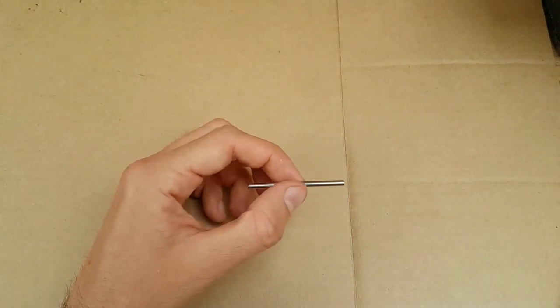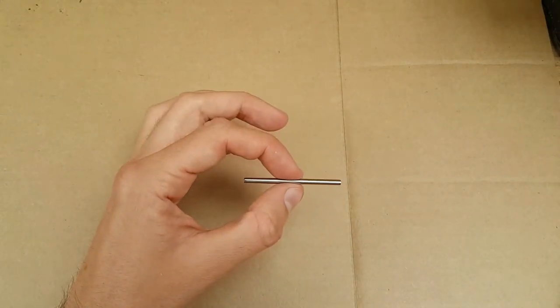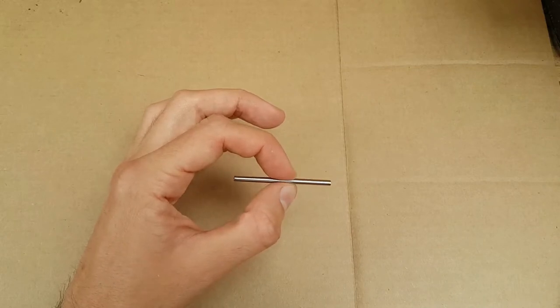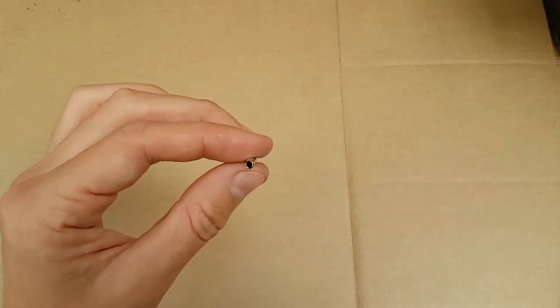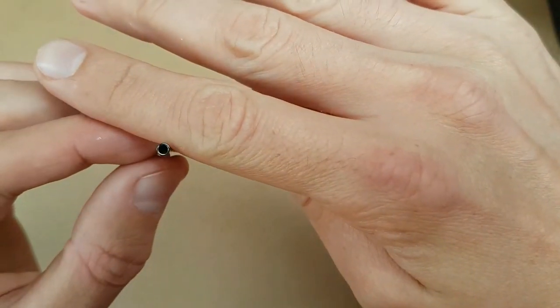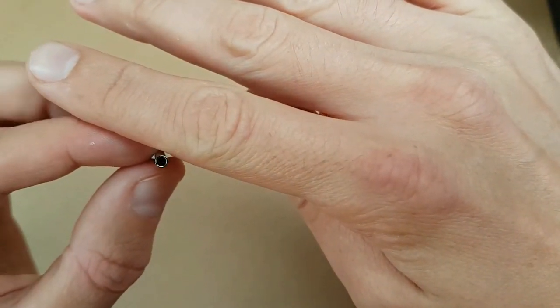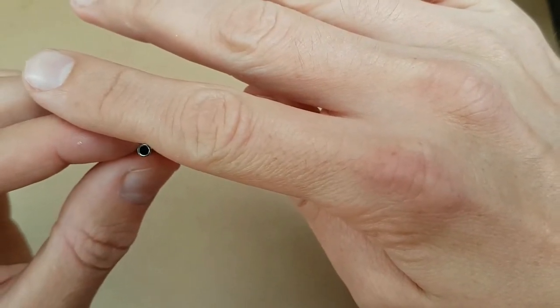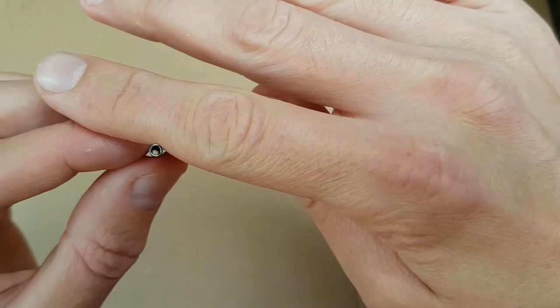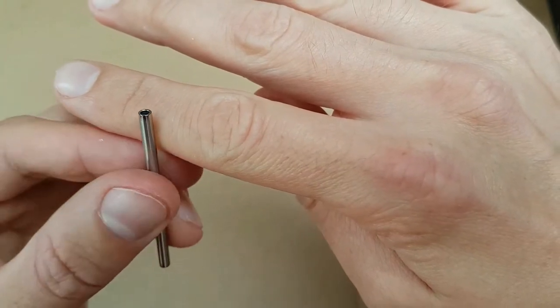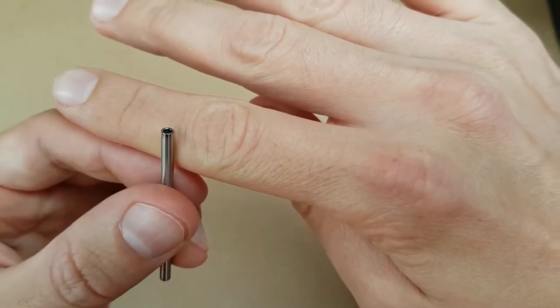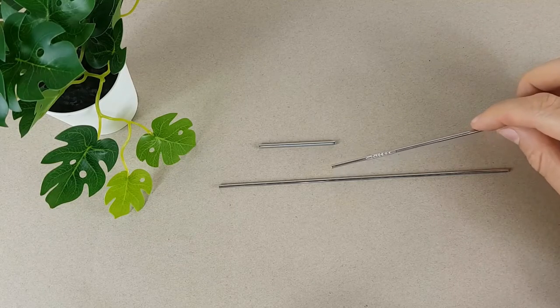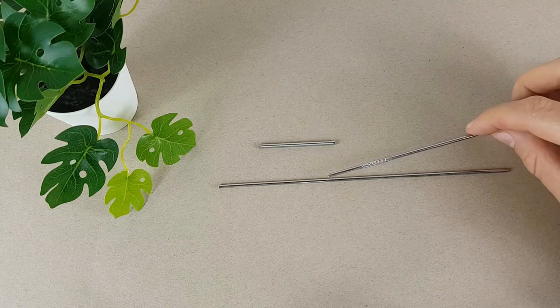There she is guys. Tube for a bobbin holder, fully polished on both ends. There's one end quite smooth, there's another end very smooth as well.